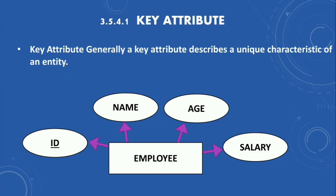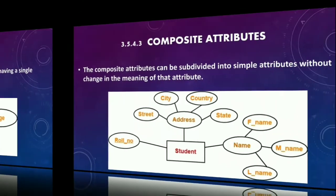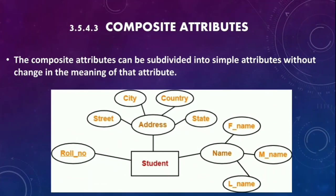The second type is simple attribute. A simple attribute is one that cannot be separated further and holds a single value for its entity. For example, the entity Student has three attributes: Roll Number, Class, and Age. All three are simple attributes — they do not need to be subdivided.